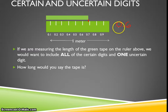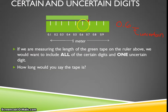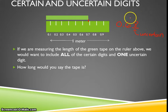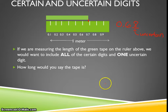The 0.6 exists on the meter stick as a certain digit. I still need to include one uncertain digit, which is estimated by me. I can see 0.7 over here, and the green tape exceeds 0.6, so I would write 0.68. Someone else in my lab group might say 0.67. Notice the uncertain digit may vary from person to person, but the 0.6 is a certain digit. Values of 0.67, 0.68, or 0.69 would all be accepted.